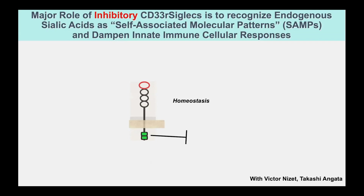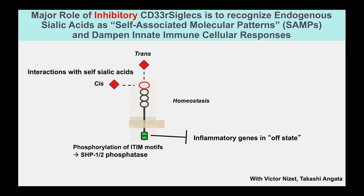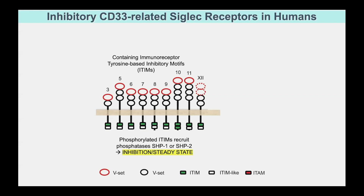Why would you want this? Because you've got a bunch of immune cells floating around your body and they're trying to attack you all the time. By having sialic acid present, the interaction of self-sialic acids — both on the same cell and on neighboring cells — triggers phosphorylation on the inside of the membrane. These motifs get activated and that keeps the inflammatory genes in the off state. So you've got very strong immune soldiers floating around your body, but they're kept off because they keep seeing these sialic acids. There are a whole bunch of different siglecs found in different cell types, and the one we're going to look at today is called Siglec-11.